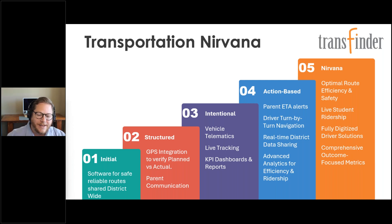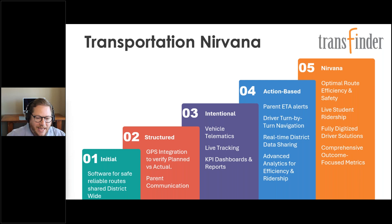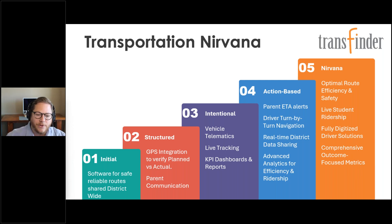From routing, we often recommend bringing in GPS so you can verify your safe, reliable plan against what drivers are actually doing. You can also start sending email and push notifications to parents about route changes. From there, live vehicle tracking lets you respond quickly to breakdowns. Vehicle telematics can alert you to engine issues or idle times, and dashboards and reporting start to tie together once you have routing and GPS implemented.